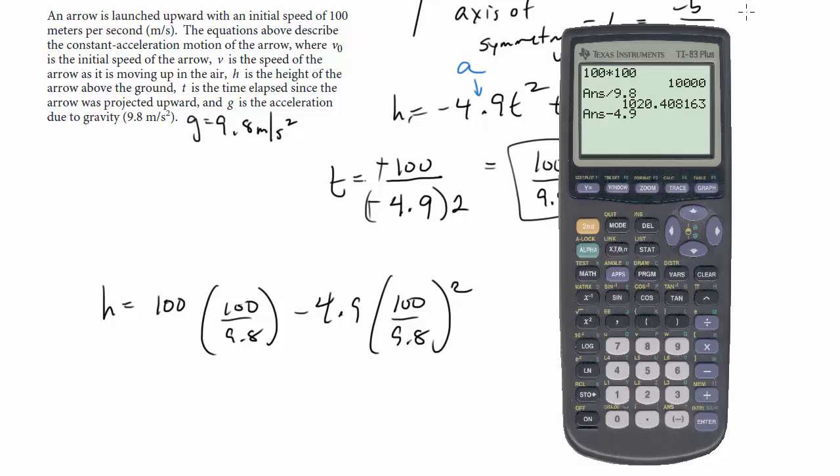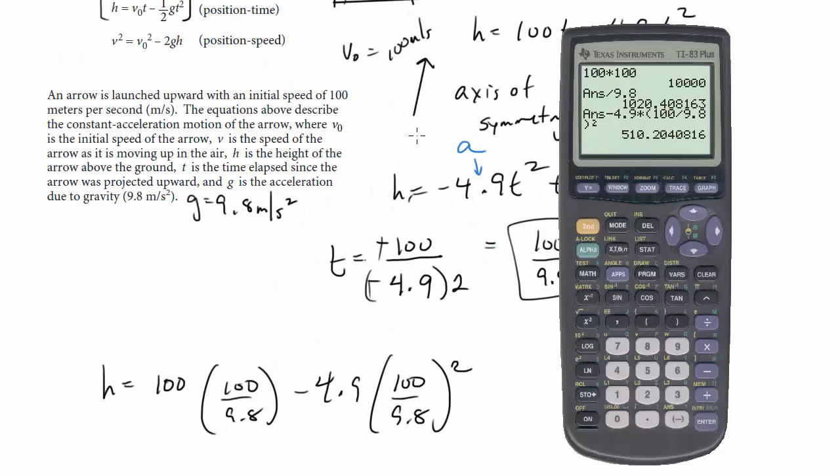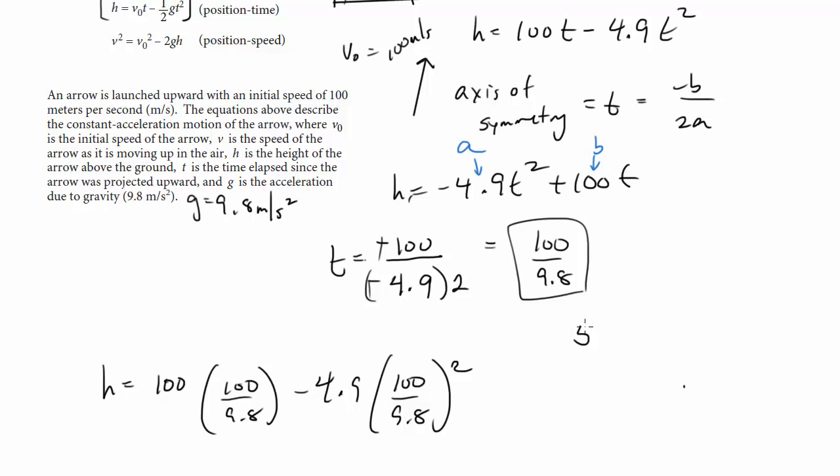So we have 100 times 100 divided by 9.8, gets me that, minus 4.9 times 100 divided by 9.8 parentheses squared. So this should work. Order of operations should work out for all this. So we do all the subtraction, we get 510. Now, do they want us to round to the nearest meter? So 510.2 to the nearest meter is going to be 510. And that's the answer.